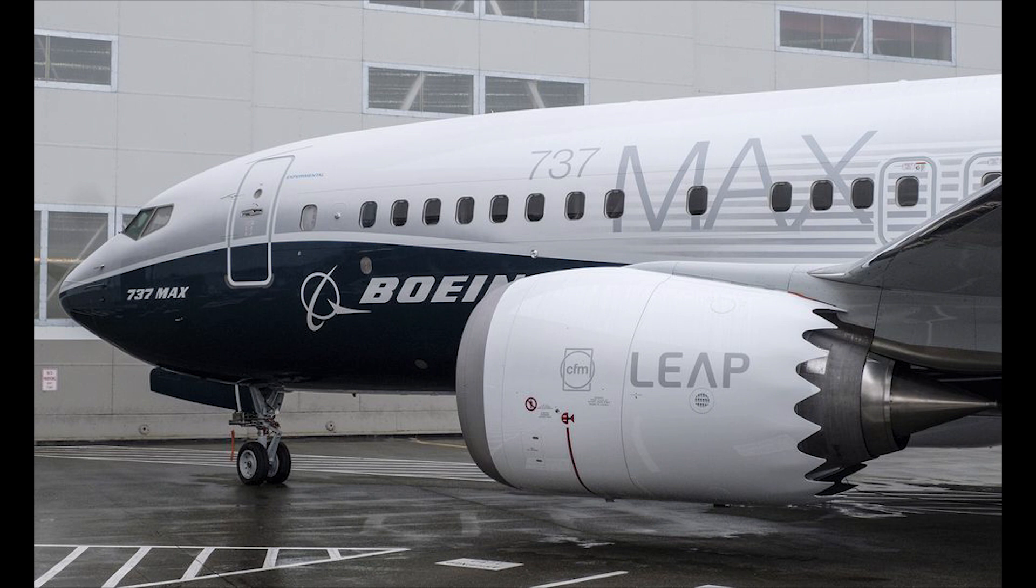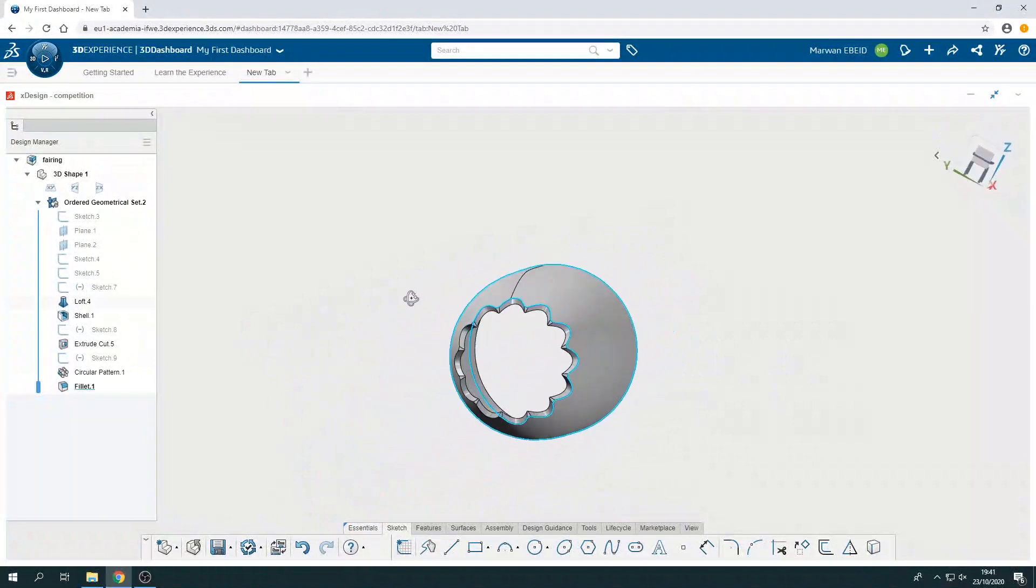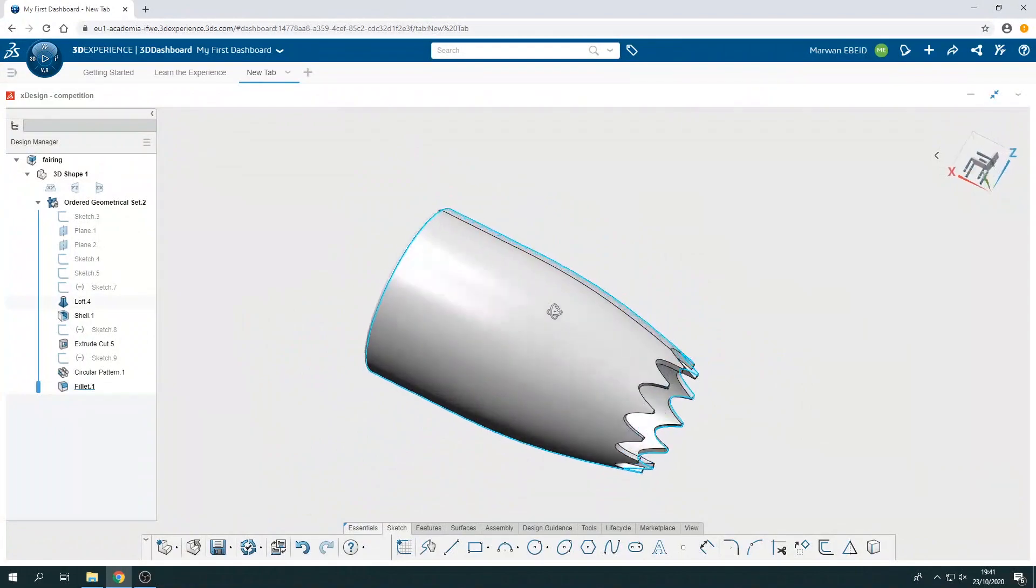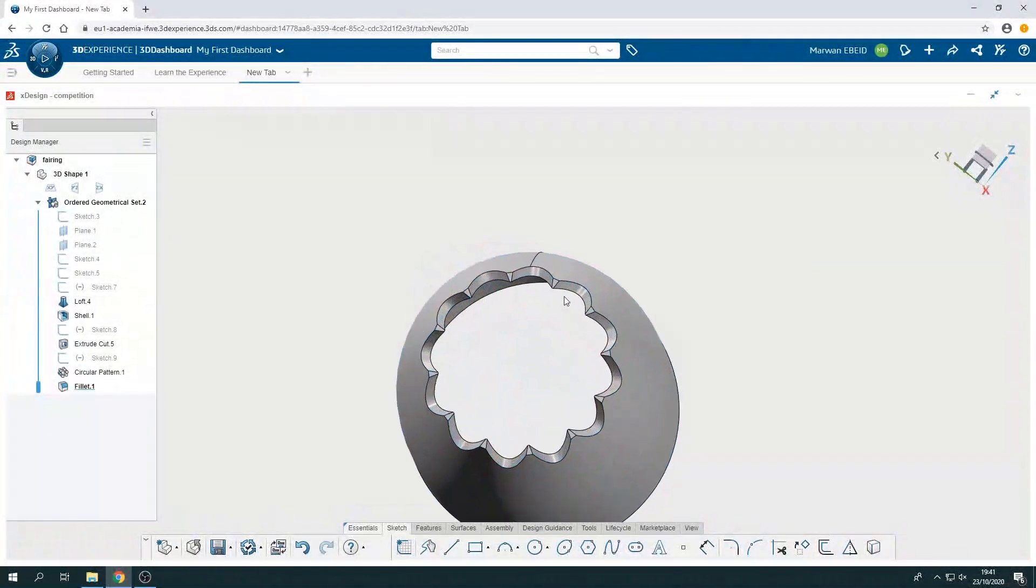The third type of chevron nozzle is the sinusoidal chevron nozzle. It is one of the new nozzle inventions.